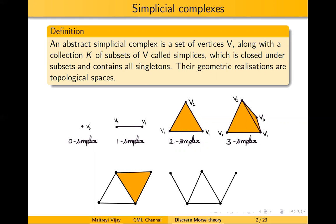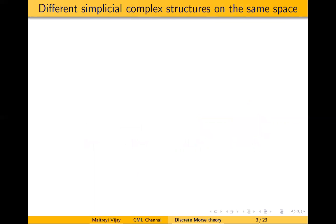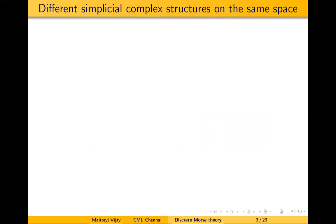Here are a couple of examples of simplicial complexes. A topological space can have multiple ways of describing it as a simplicial complex. For instance, if you consider S2, it can be represented as a hollow tetrahedron or a hollow octahedron. Both are simplicial complexes whose realizations are S2.